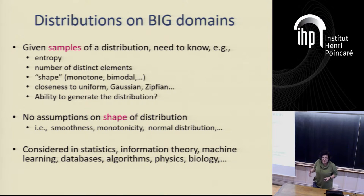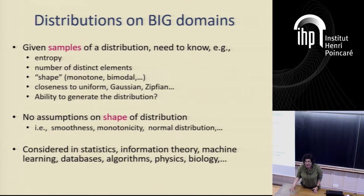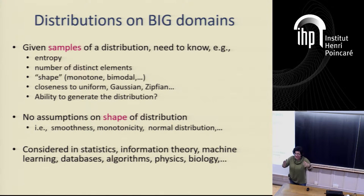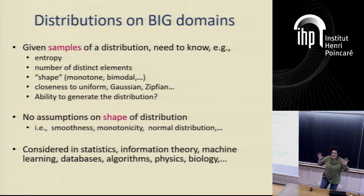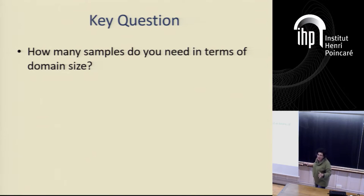What has been happening in the last 15 to 16 years is a focus on the size of the domain: how many samples do you need in terms of the size of the domain? For those used to the statistics literature, this will be different: instead of saying I have a fixed number of samples, what's my error — I'm always going to say, here's the error I want, how many samples do I need? This causes tons of confusion, so please ask questions and we'll work it out together.